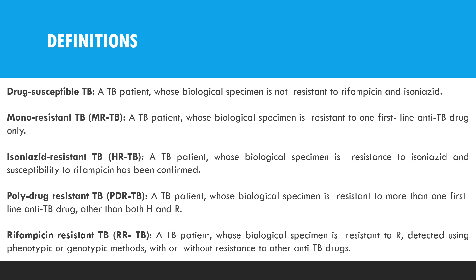Poly drug-resistant tuberculosis refers to resistance to more than one first-line anti-TB drug other than isoniazid and rifampicin. Rifampicin-resistant TB refers to resistance to rifampicin detected using either phenotypic or genotypic methods, with or without resistance to other anti-TB drugs. That covers the definitions of various forms of tuberculosis resistance.